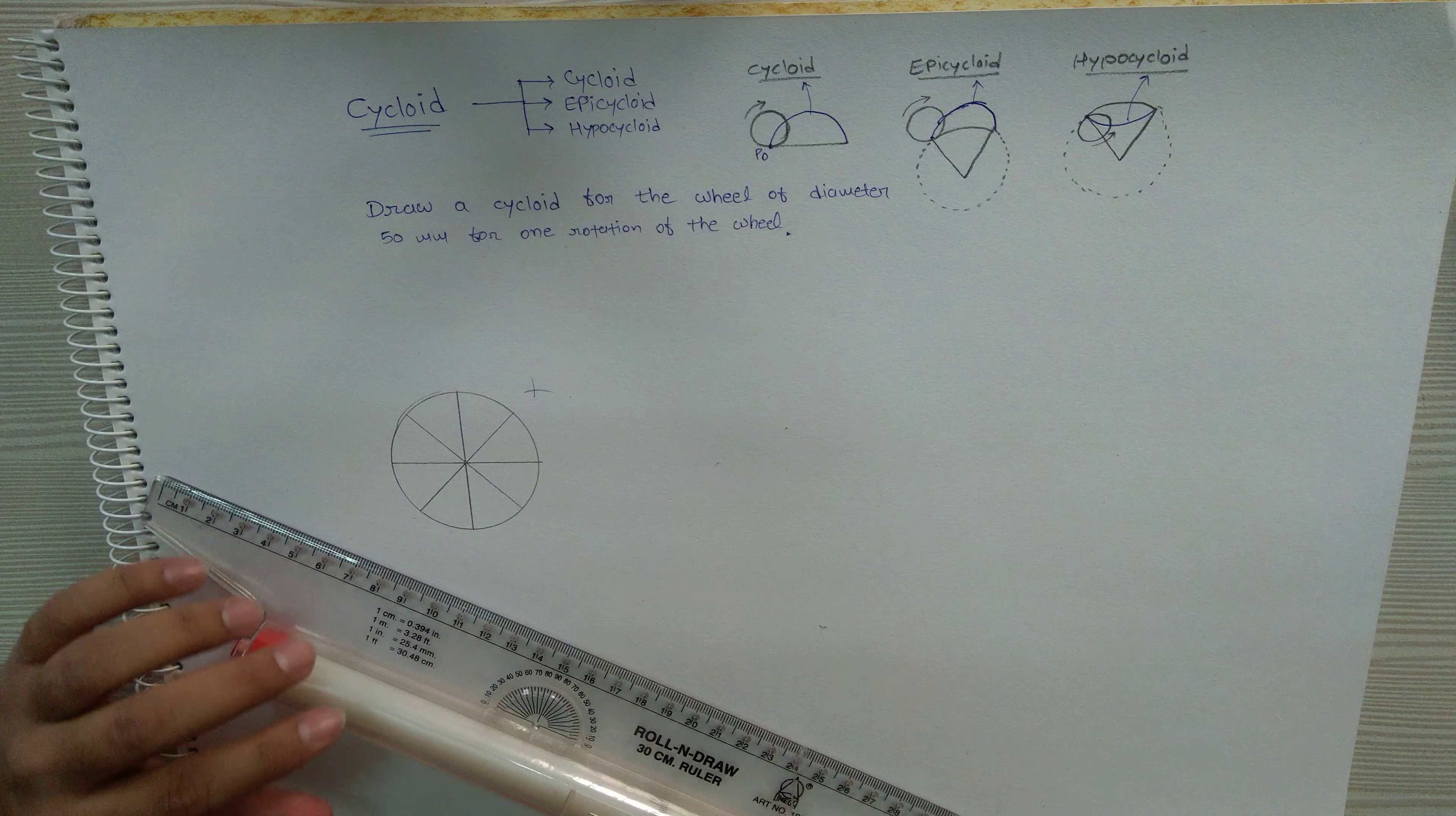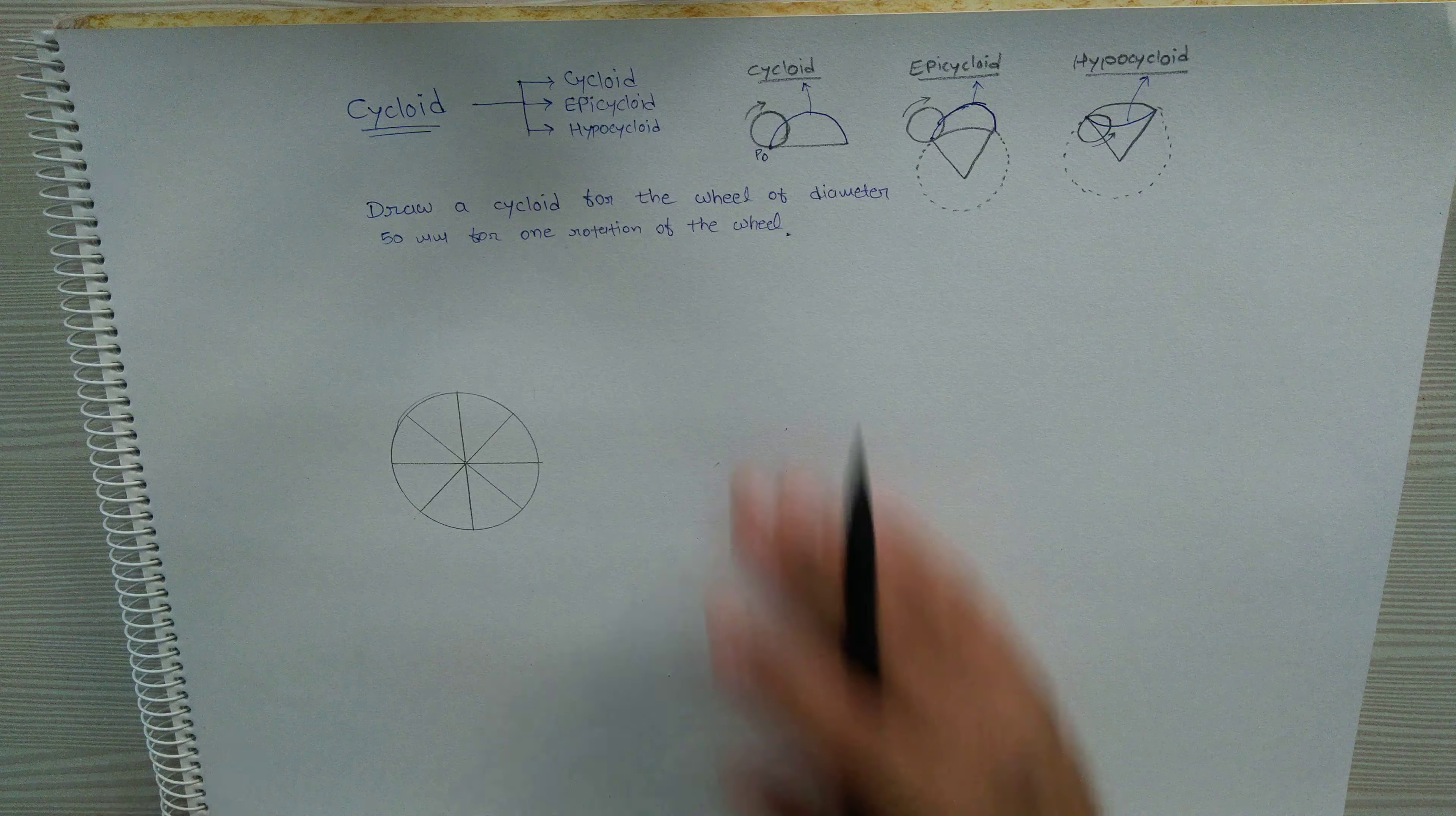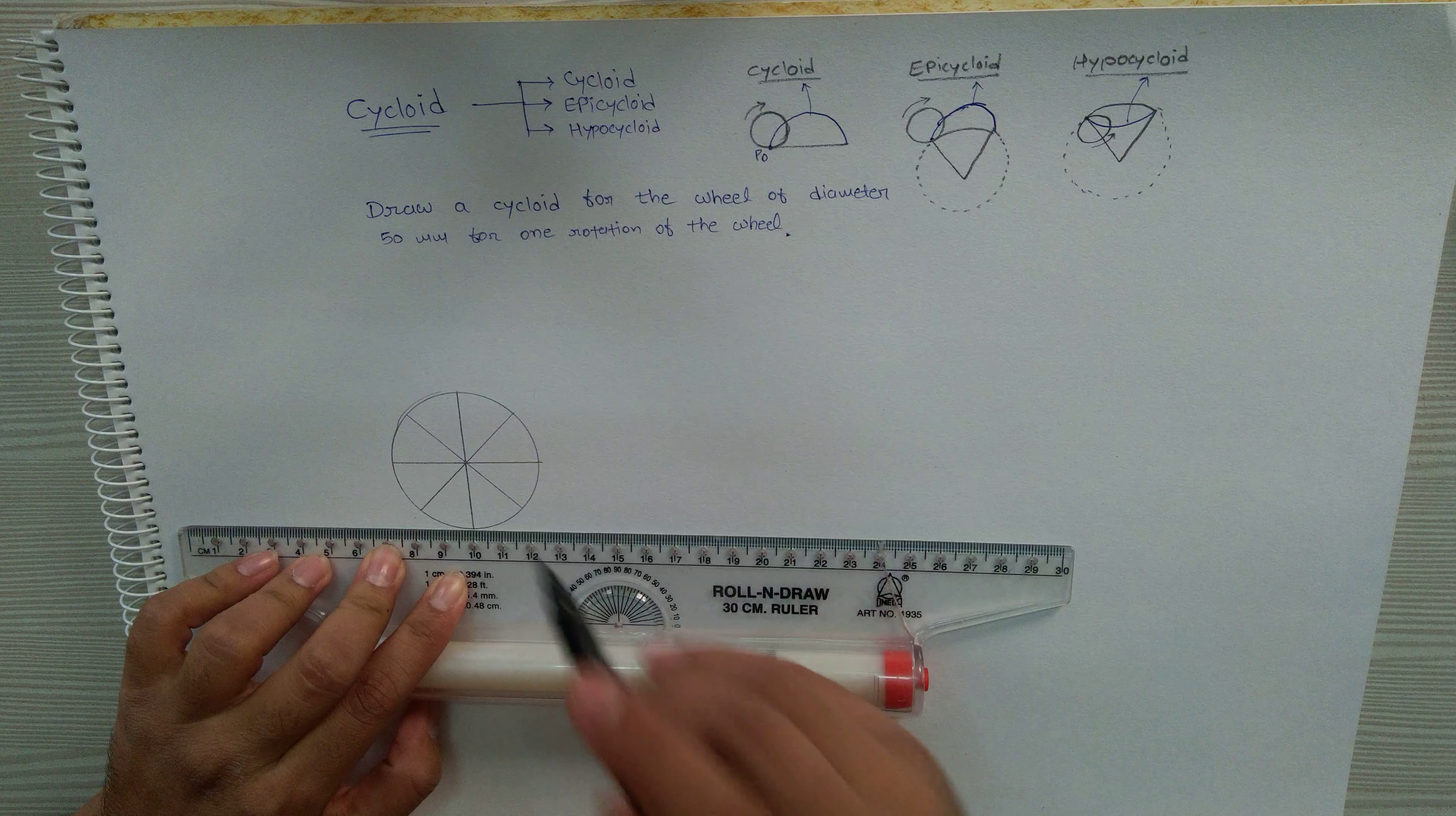In this problem we need to draw a cycloid for one rotation of the wheel. The diameter of this wheel is 50 mm. In one rotation, the wheel will cover a linear distance of π × d, that is 50 mm × 3.14, which equals 157 mm.